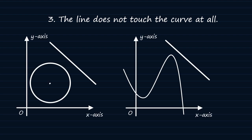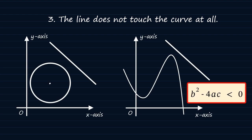The third and final interaction would be when the line does not even touch a curve or a circle. In such a case, b squared minus 4ac is less than zero. So these here are the three ways that a line interacts with a curve.